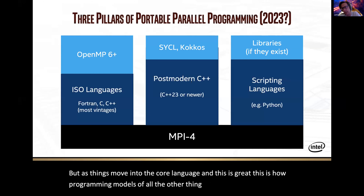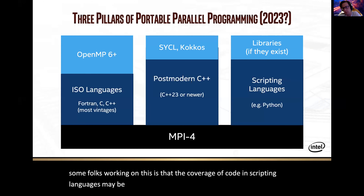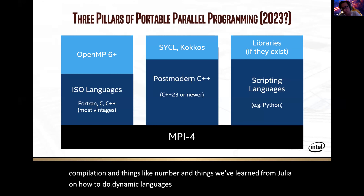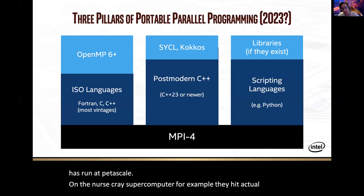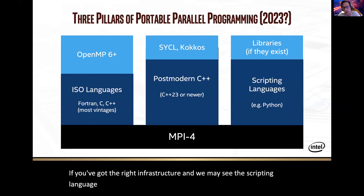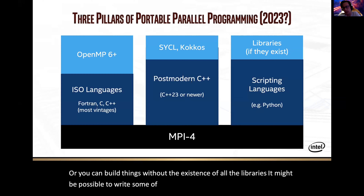The other thing that may happen is the coverage of code in scripting languages may be able to grow, because we're getting just-in-time compilation and things we've learned from Julia on how to do dynamic languages with high performance. Julia has run at petascale on the NERSC Cray supercomputer — they hit actual petaflops with Julia. So you don't have to stick to Fortran and C++ to get good performance if you've got the right infrastructure. We may see the scripting language compiler technology get better such that you need libraries less often, or you can build things without the existence of all the libraries.